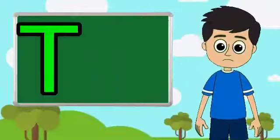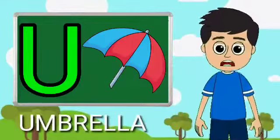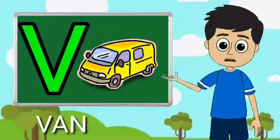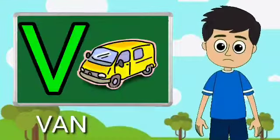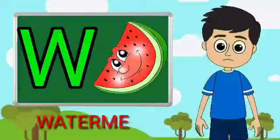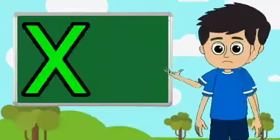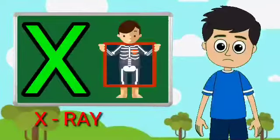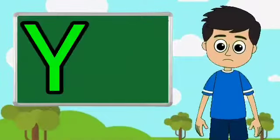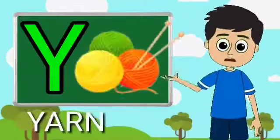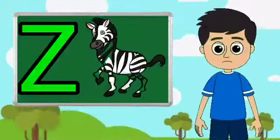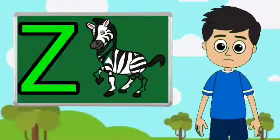U for umbrella, V for band, W for watermelon, X for extra, Y for yarn, Z for zebra. And subscribe to our channel.